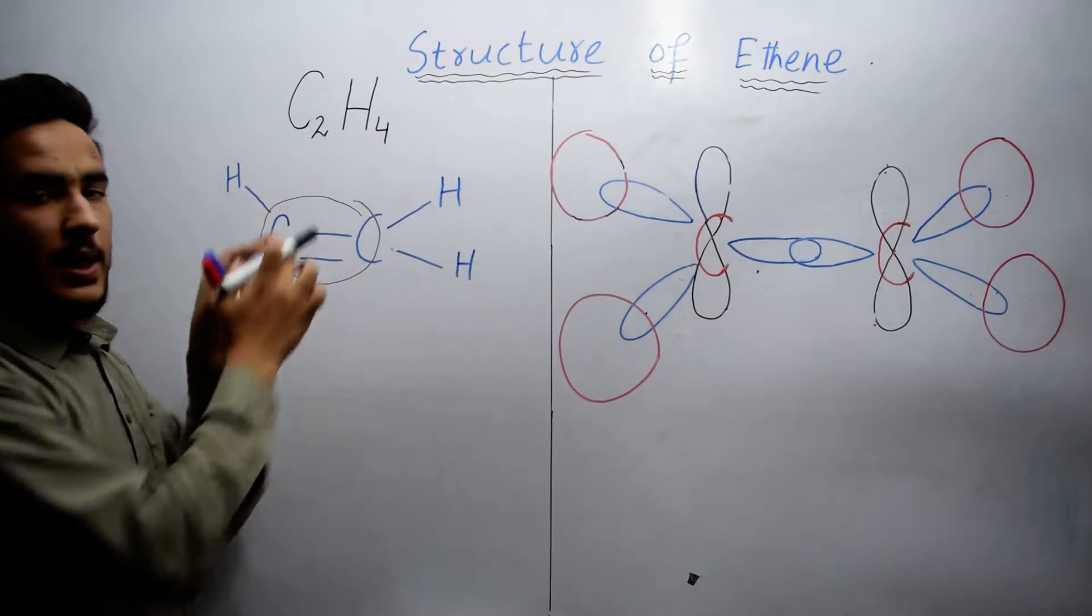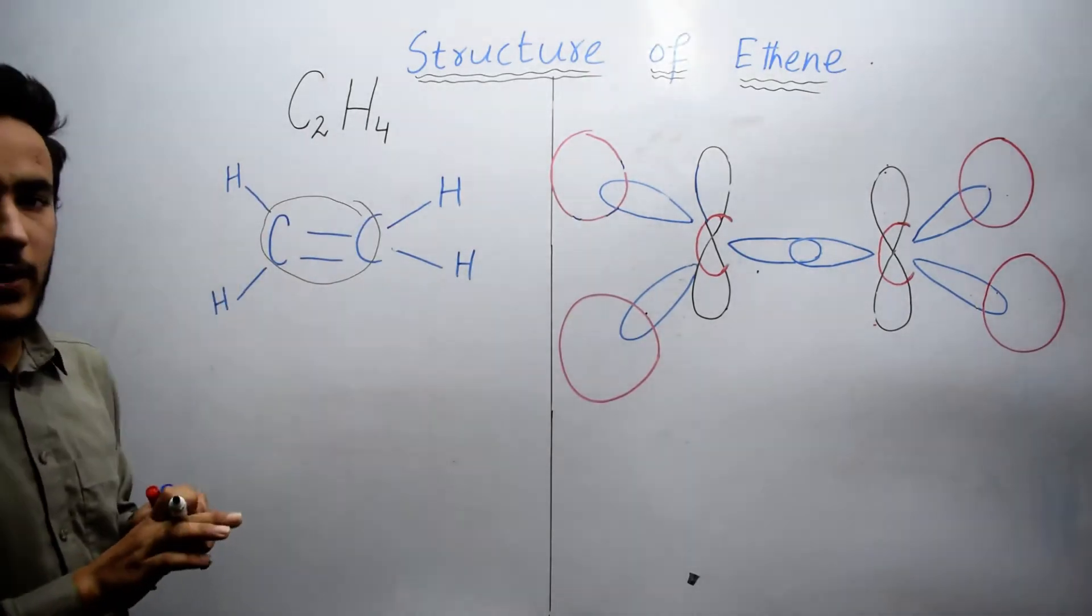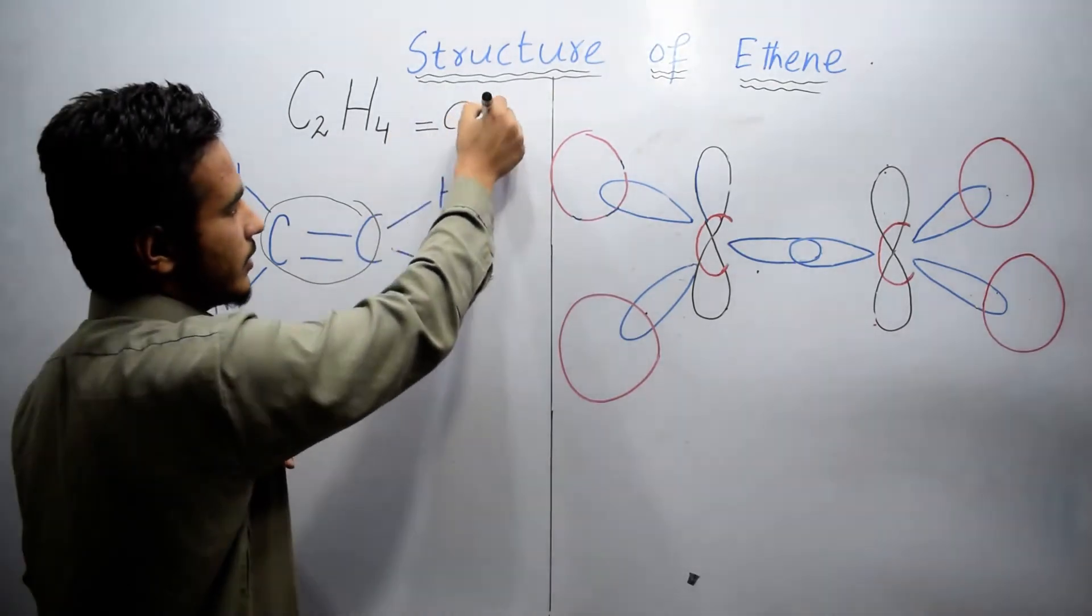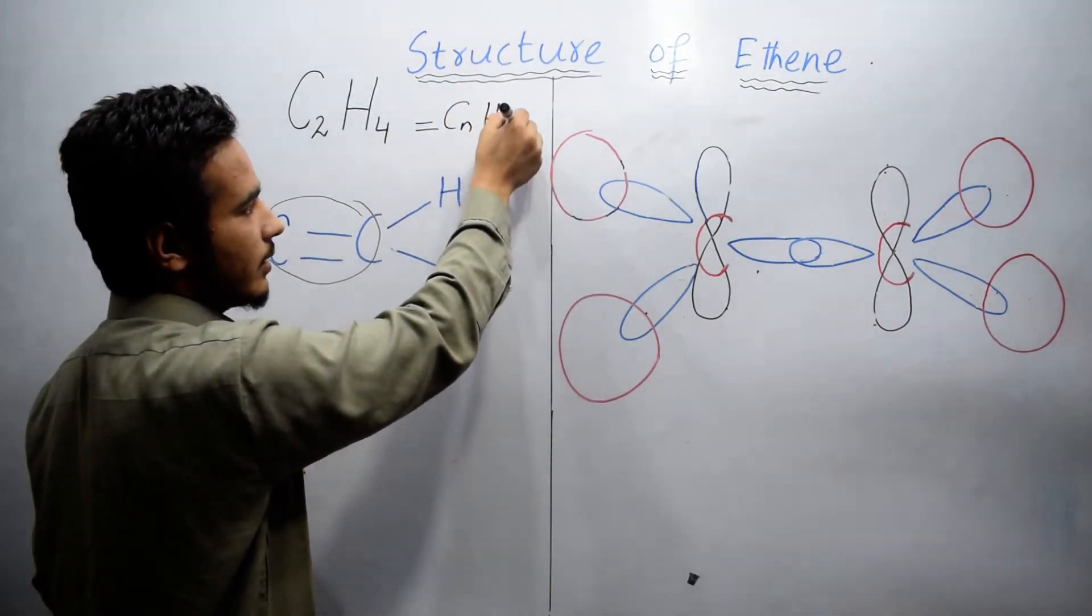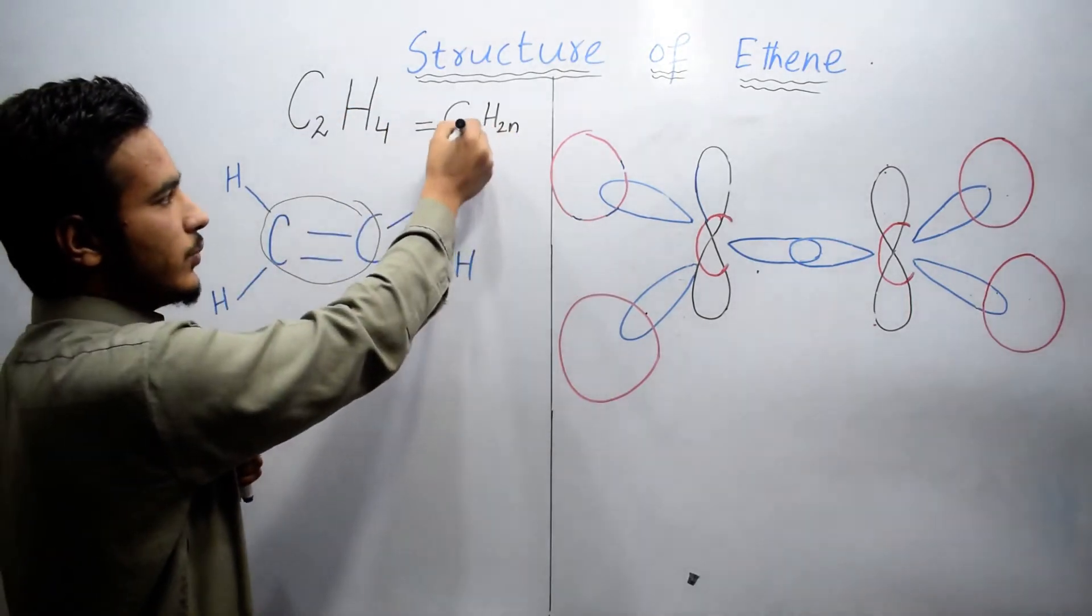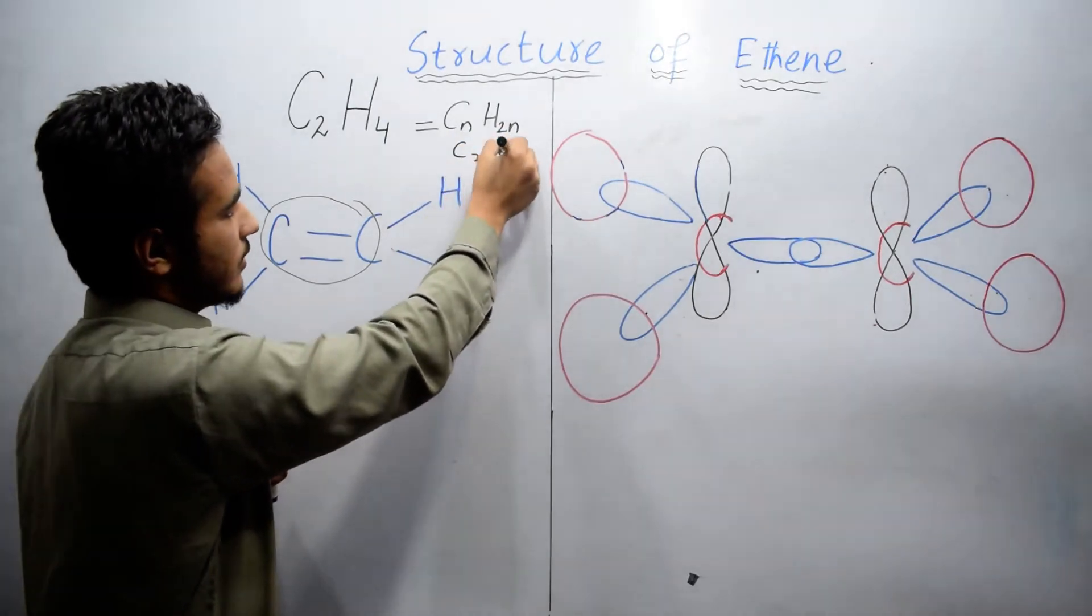We have the general formula of ethene and we can find it through formula CnH2n. If we have 2 carbon atoms and if we put n equals 2, we will get C2H4.